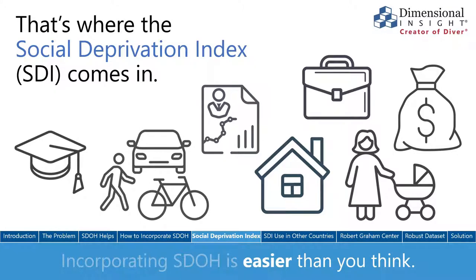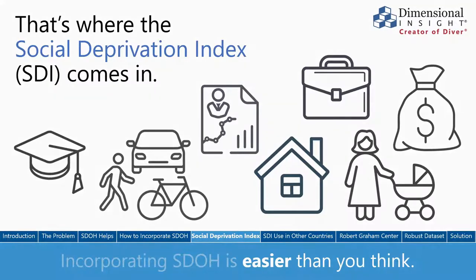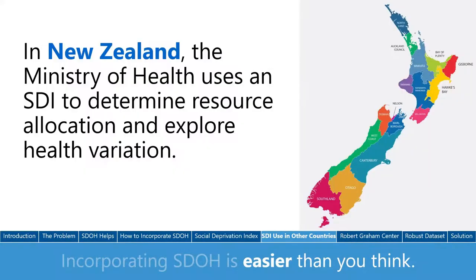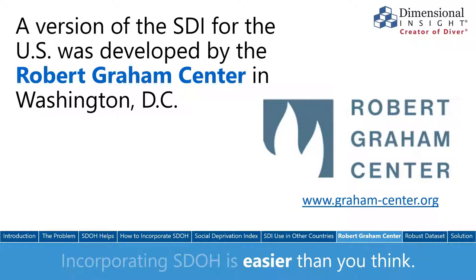In our research, we discovered the concept of the Social Deprivation Index. It combines a set of social determinants factors into a single number — the index — which provides a useful starting point for analyzing the social characteristics of a population. Several countries are already using SDIs to help manage the health of their populations, including the United Kingdom and New Zealand. New Zealand is using the SDI metric to determine resource allocation and to explore variations in health outcomes among their populations.